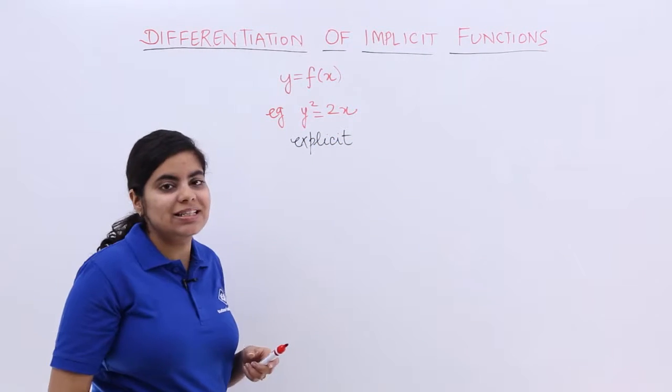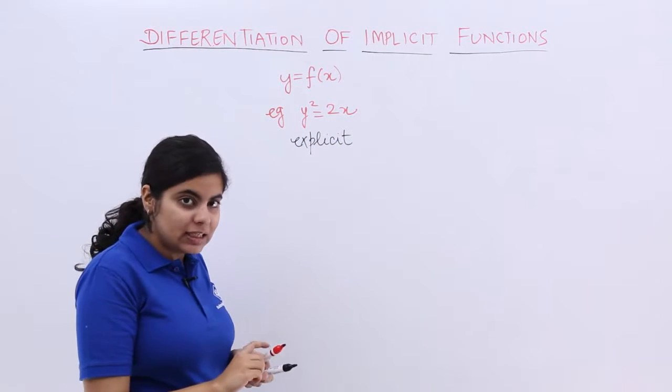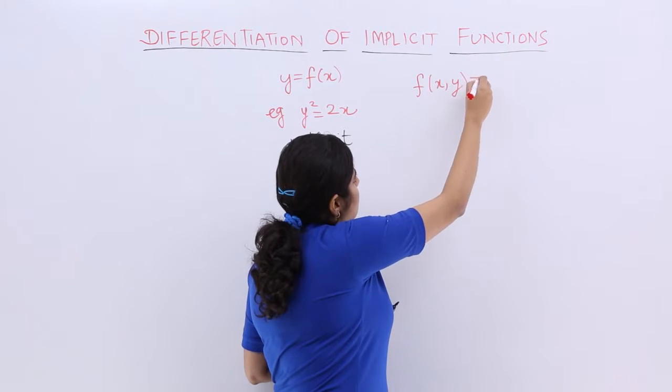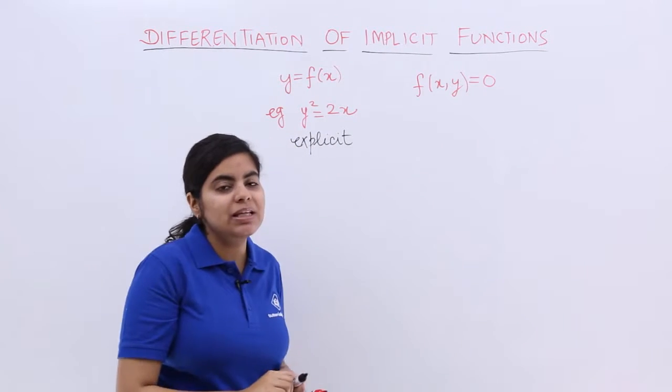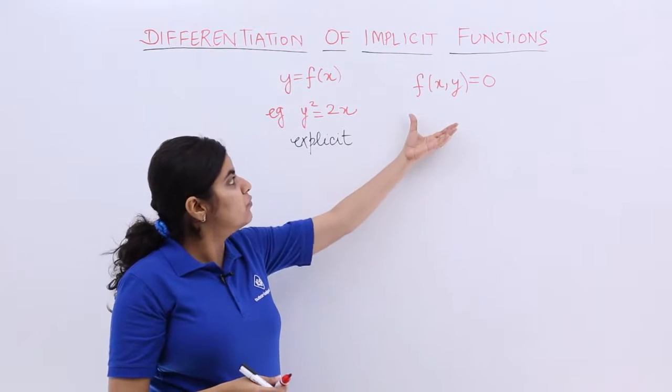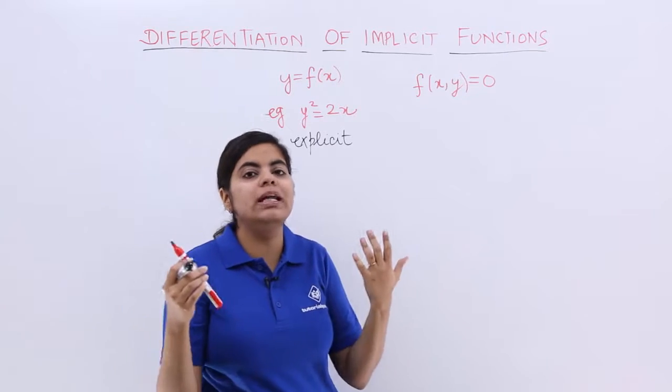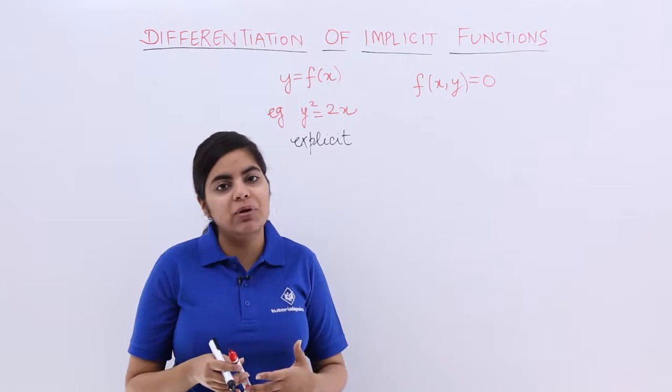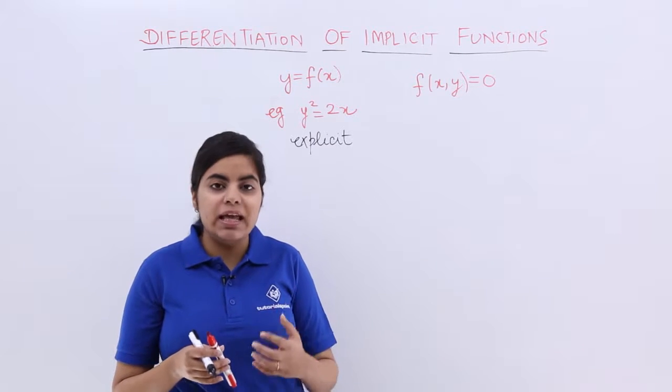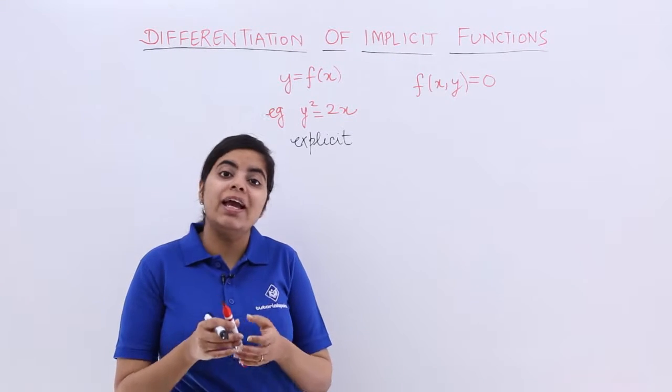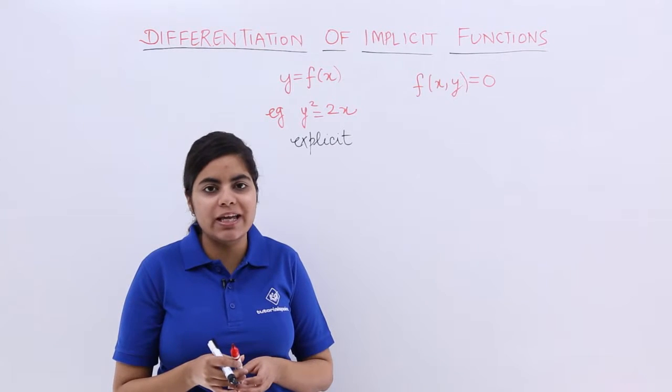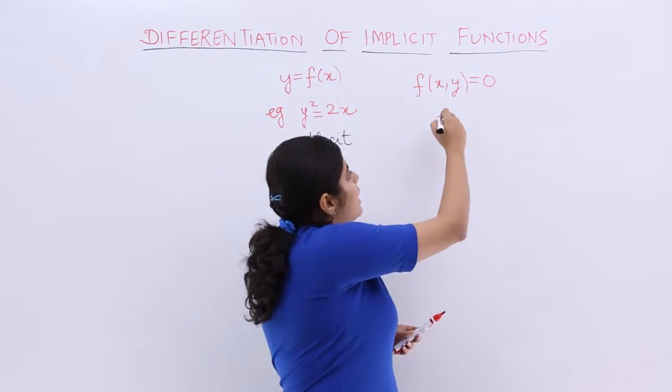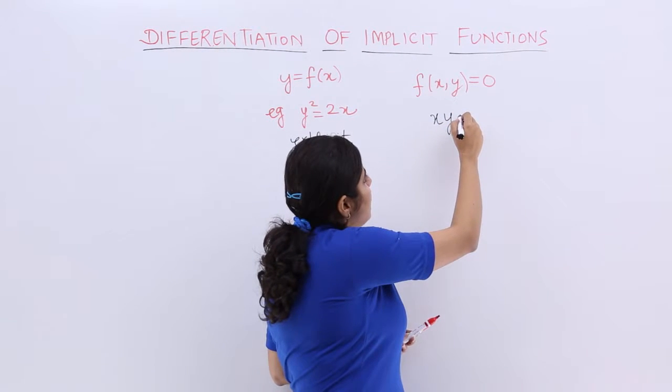The explicit category of the function. But if we have something in the form of f(x,y) equal to 0, that means we have an expression wherein x and y are basically included in themselves only, in one equation only. We cannot separate them as such. Then we say that that is the category of implicit function.